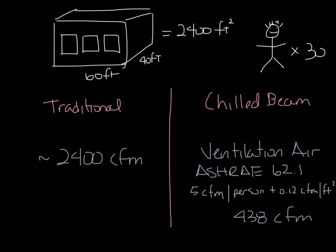So looking at best case, for a traditional system, you would need 2,400 CFM. But for the chilled beam system, you'd only need 438 CFM. So that's a big difference in airflow that you need to provide.